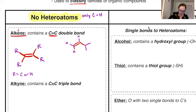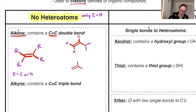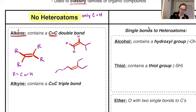We could also have an alkene with higher substitution — maybe three carbon chains off of it and one hydrogen. Those are all examples of alkenes. One other kind of alkene you can see is a cyclic alkene — for example, a double bond within a ring. That is also an alkene, just in a ring.